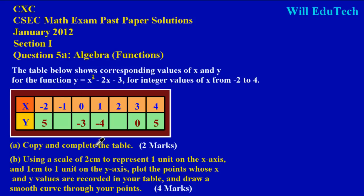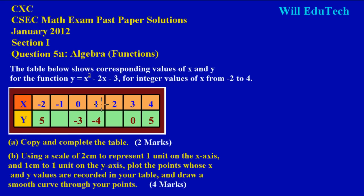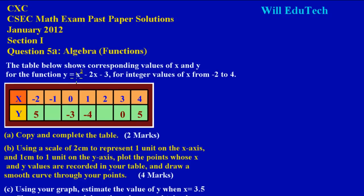We have our function and in part a they're asking us to copy and complete the table — that's an easy two marks. In the exam, if you're on a question sheet, they'll give you this table, but you shouldn't fill it out on the exam sheet. Always ask for the answer sheet if you don't see it. Whenever you're asked to draw a graph, to find corresponding y values for x values, this is what you do.